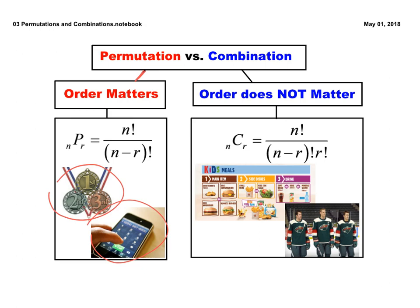Combination, on the other hand, is when order doesn't matter. So if you're ordering off a kid's meal, you're going to choose a main item, a side dish, and a drink. It really doesn't matter what order you order the items in because you're still going to get all of them and what you want — it's the same meal.